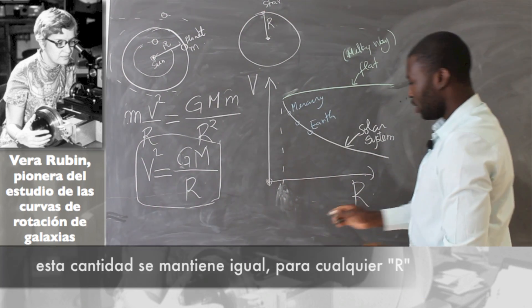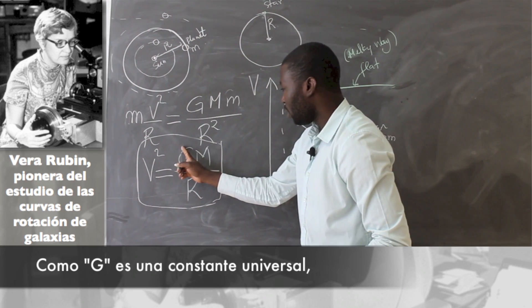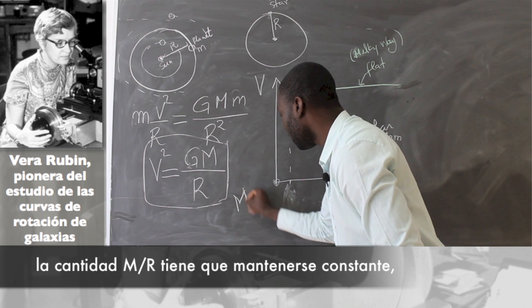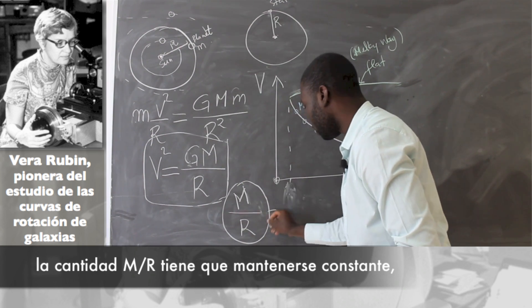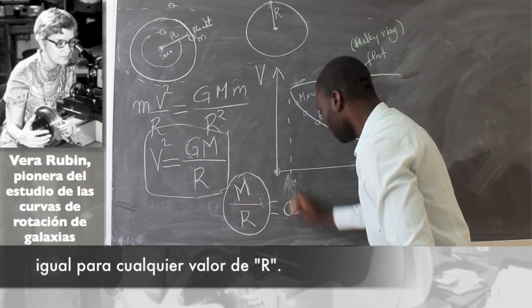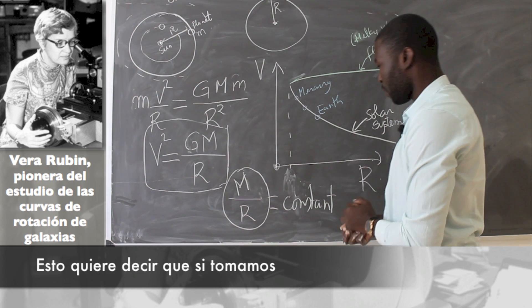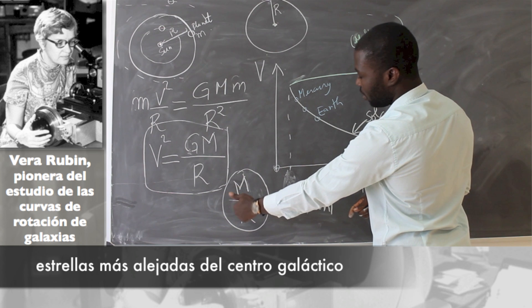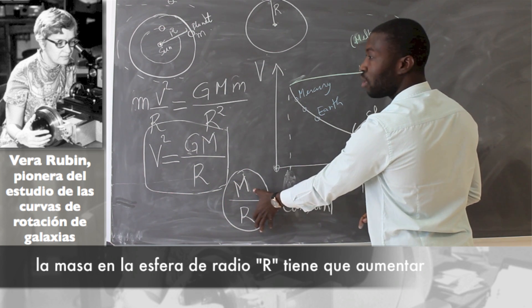Meaning that this quantity here tends to be constant. This one being constant, only this term here will be constant. This means that as the star is far away from the center of the galaxy, you need more mass to maintain this one constant.